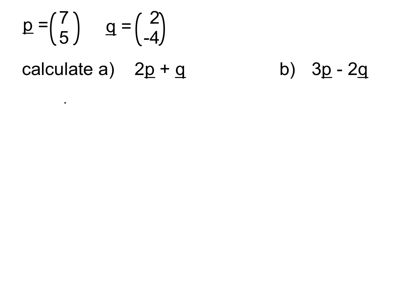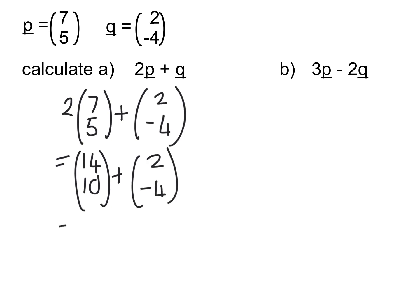So 2P plus Q means we're going to have 2 of the P vector. And then we're adding 2, negative 4. So we're doubling the first vector, making it 14, 10. And then we're going to add the second vector. Add the top row. 14 add 2 gives you 16. Well, I don't know why I've written it as a fraction, sorry. And 10 take away 4 gives you 6. So the answer would be 16, 6.